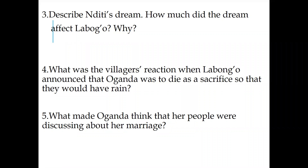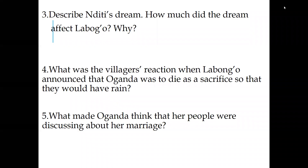Number five: what made Olganda think that her people were discussing about her marriage? Because she was old enough and she had someone who loved her — Osindar. That is only part of the information written in the story of Ogonda in The Rain Camp. Please read more on your own.